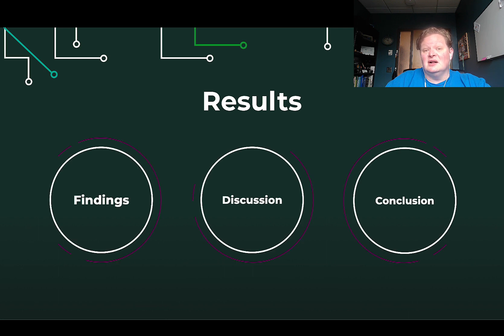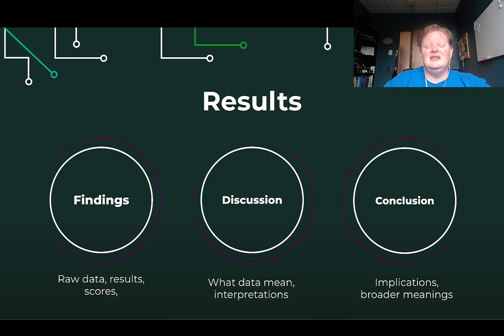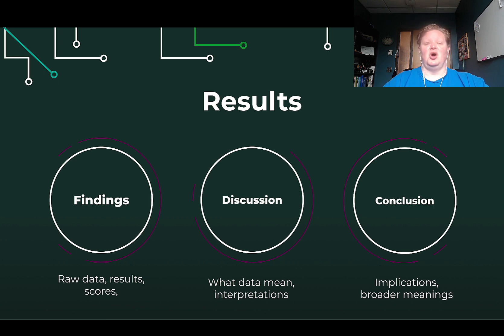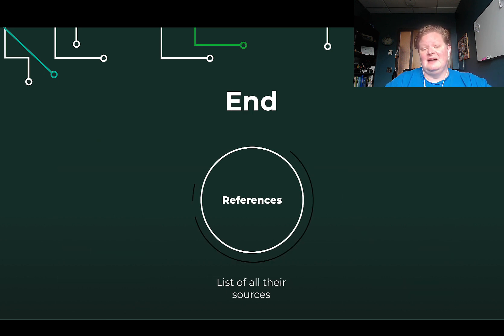In the results section you'll find findings, discussion, and conclusion. The findings are the raw data — stats, tables, and charts. The discussion is where the authors make sense of their findings and interpret them for you. The conclusion draws broader patterns and makes bigger statements. And at the end, there will be a reference list listing all of their sources.